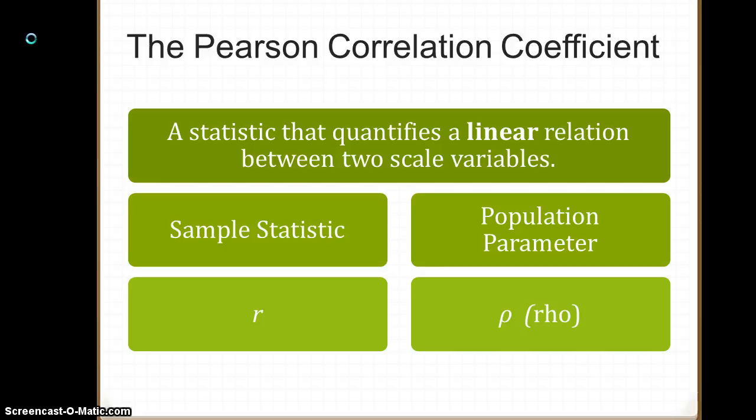The population parameter is always in Greek. In this case, it's the Greek letter for R, which is rho, and it looks like a lowercase p.